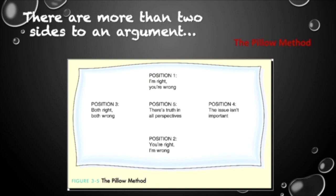And then position three says, maybe there's a little bit of both of us being right and both of us being wrong. So we need to break this down further. Position four is that maybe this isn't as big of a deal as I'm making it out to be. Why would that be? What would that look like?